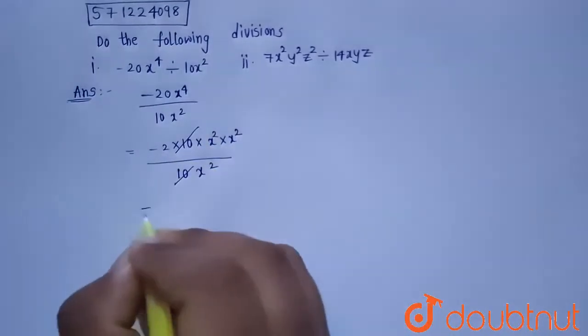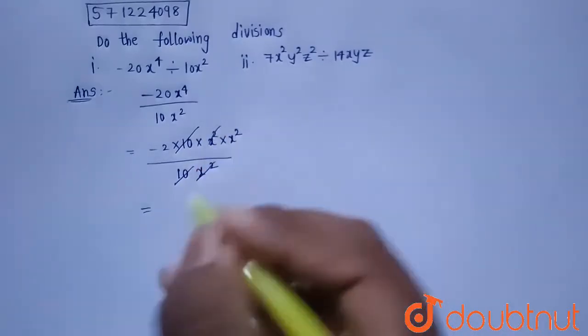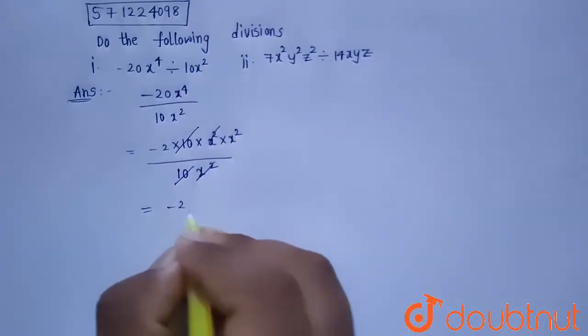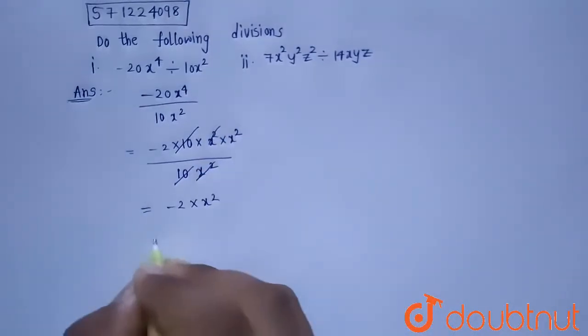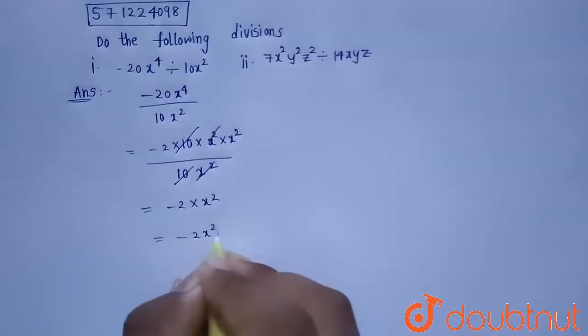Now this 10 will get cancelled, and this x square will get cancelled. We will be left with minus 2 into x square, and that is nothing but minus 2 x square.